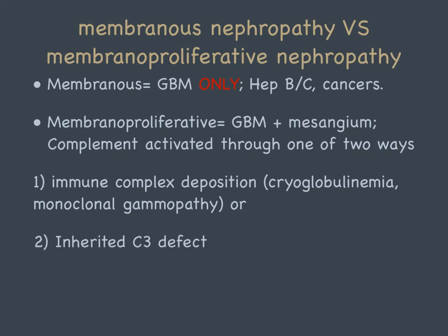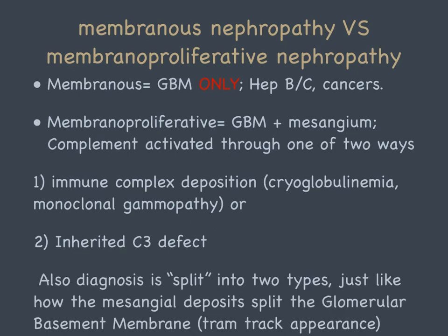The second type of membranoproliferative is an inherited C3 defect, which is innate to the patient and causes complement activation. Part of the pathophysiology is that mesangial deposits split the glomerular basement membrane, creating a tram track appearance on electron microscopy.